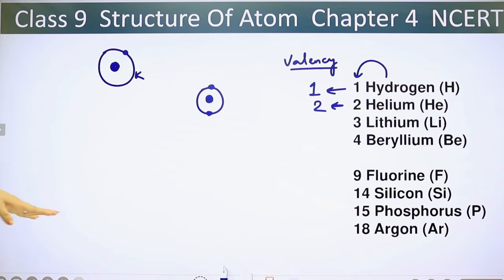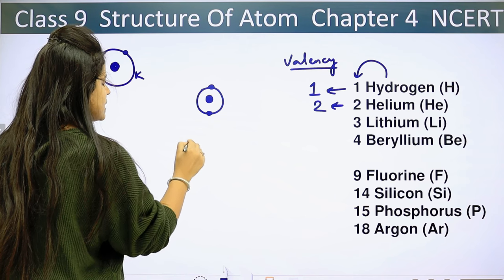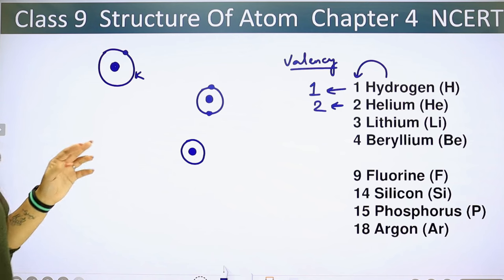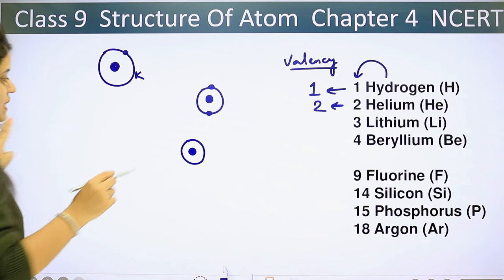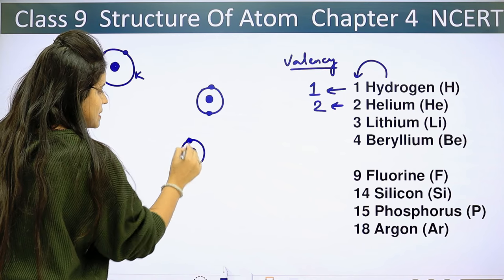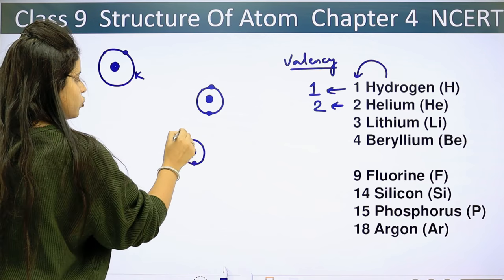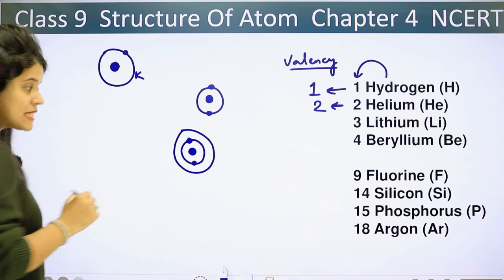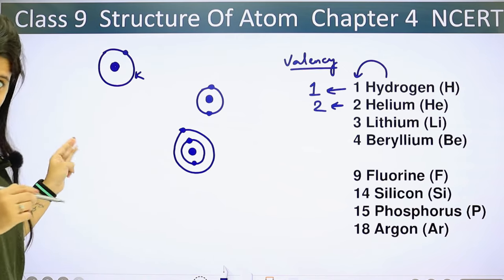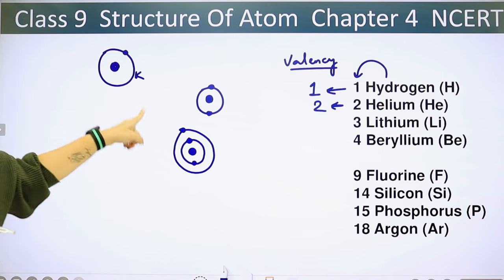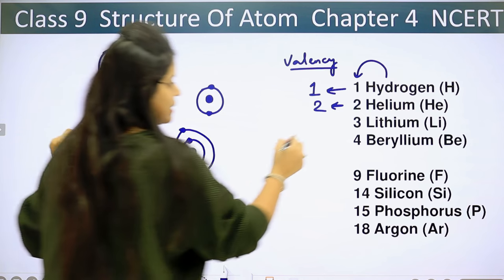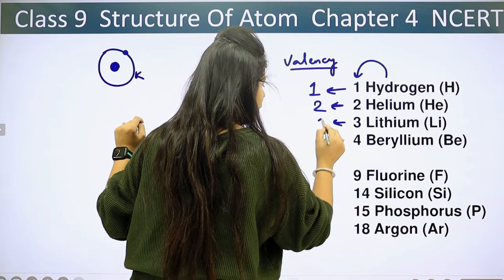Third, our lithium. It has atomic number 3, meaning we have to arrange 3 electrons. This is our nucleus. We make the K-shell and place 2 electrons in it — K-shell can only hold 2. So we create another shell, the L-shell, and place the remaining 1 electron in it. The outermost shell has only 1 electron, so the valence of lithium is 1.